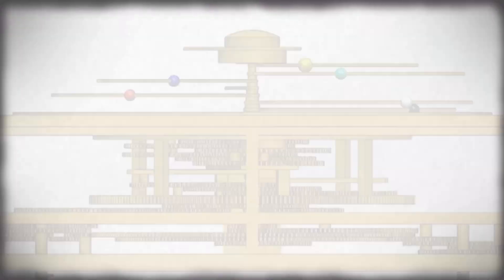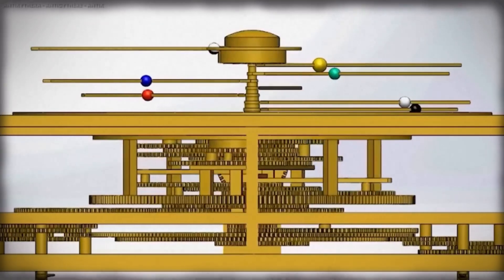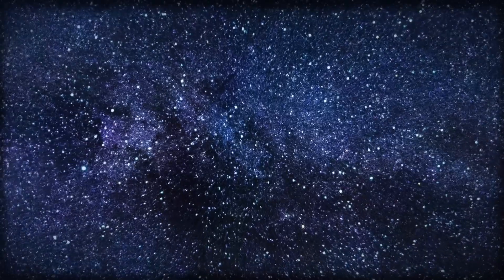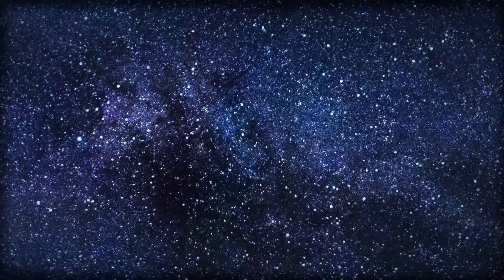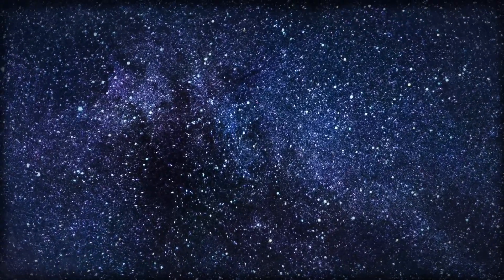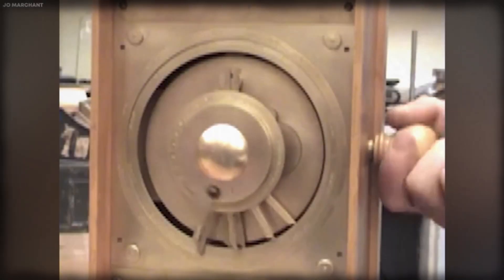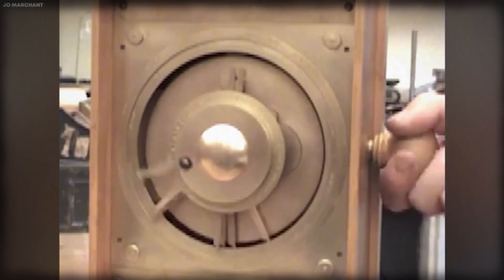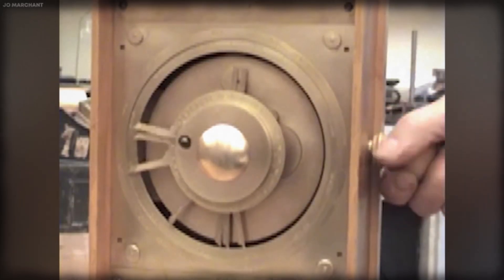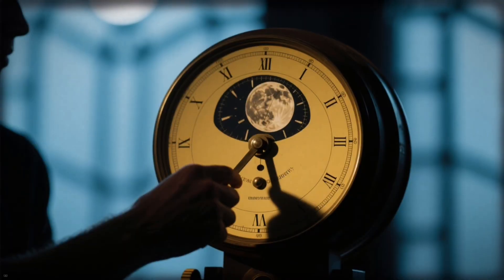so that each planet appeared to pause, drift backward, then continue forward again, exactly as seen from Earth. The design was impossibly elegant. Each layer of bronze was alive with mathematical precision. One turn of the handle represented a day, another a month, another a year.